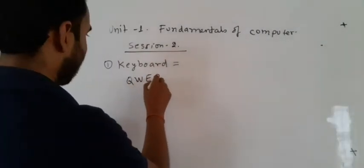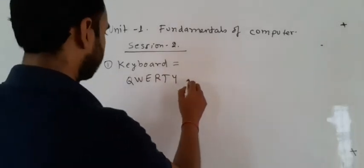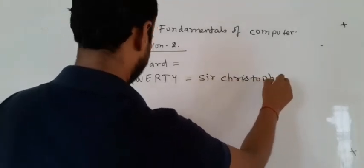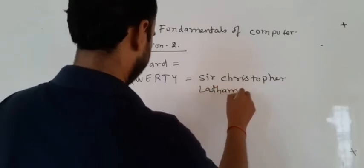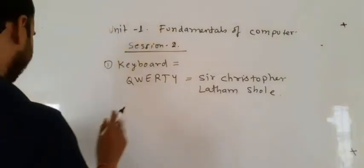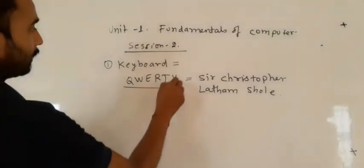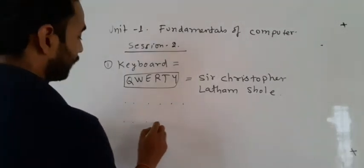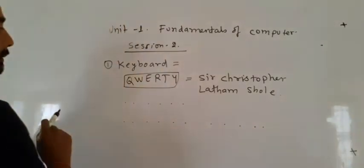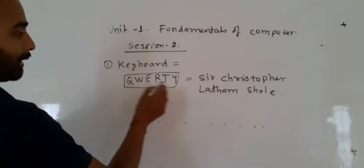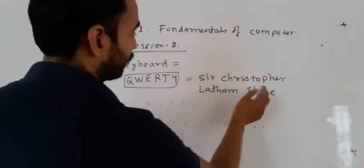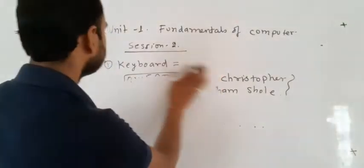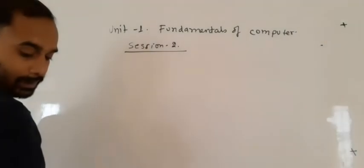Q-W-E-R-T-Y, QWERTY form - the arrangement of the letters. Sir Christopher Latham Sholes was an American scientist who arranged the letters of the keyboard in QWERTY form: Q-W-E-R-T-Y, A-S-D-F-G-H, semicolon L-K-J-H. The arrangement of the letters on the keyboard is in QWERTY form, arranged in a particular order so that typing is very easy.